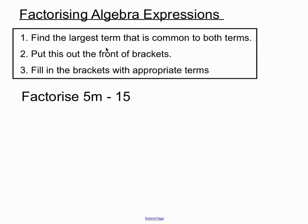Factorising this, the largest term that's common to both of these terms - 5 can go into both of them, so we're going to put that 5 out the front. Then we're asking ourselves some questions. 5 times what would make 5m? We need an m to be in that first section of the bracket. Then we ask, carefully, 5 times what makes minus 15? That might be a minus 3. And we can expand that and check that it equals 5m minus 15.